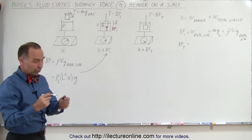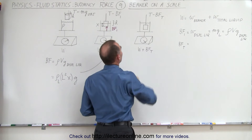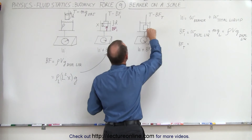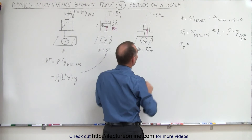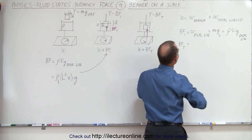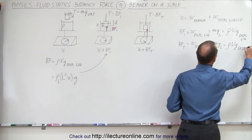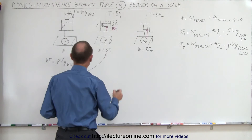Now what happens when we continue to lower the object until the entire object is suspended inside the liquid? We have now reached the total buoyancy force offered by the liquid. Since more of the cube is inside the liquid, there's more liquid being displaced and the buoyancy force is now greater. The buoyancy force total is equal to the weight of the displaced liquid, which is rho times v times g of the displaced liquid — only now there's more displaced liquid.